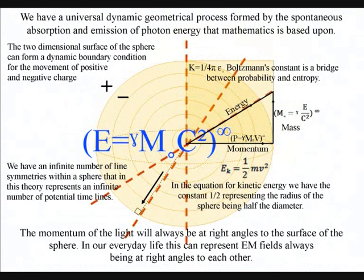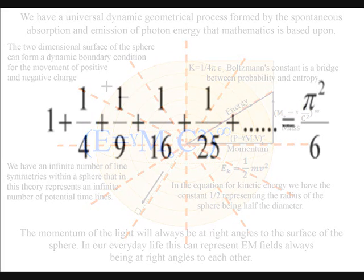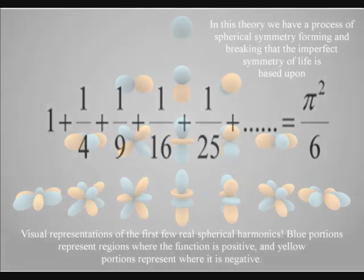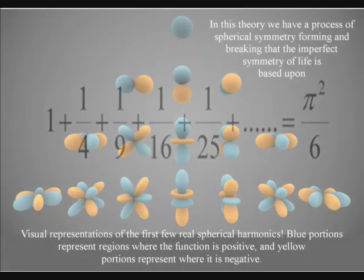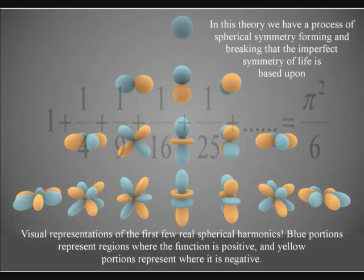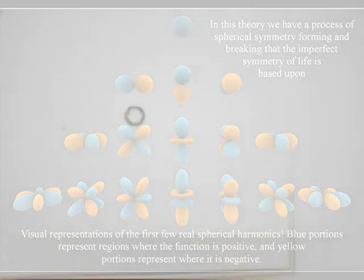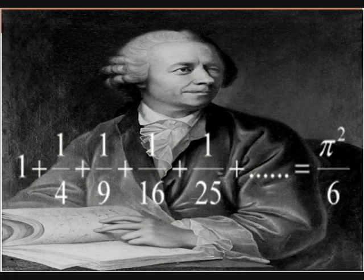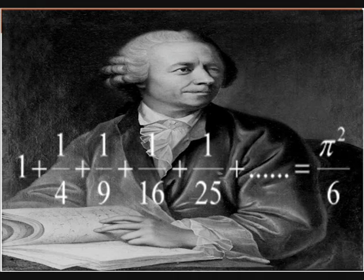If we take the infinite series one plus one quarter plus one ninth plus one sixteenth and so on where you are adding the inverse of the next square number, it can seem difficult to believe that this series of numbers can be based on a process of spherical symmetry forming and breaking. But in 1734 Euler found that if you keep adding on more and more terms this sum approaches pi squared divided by six.